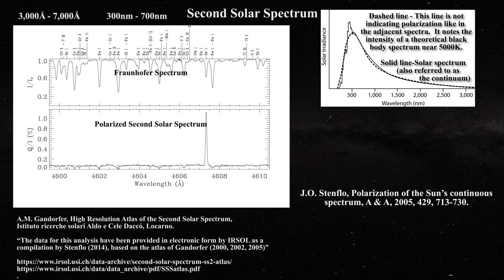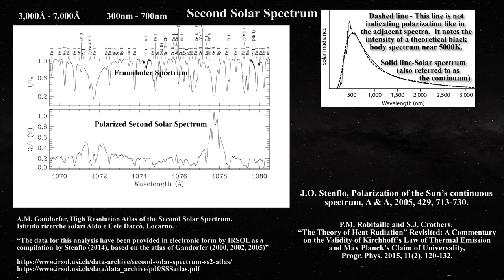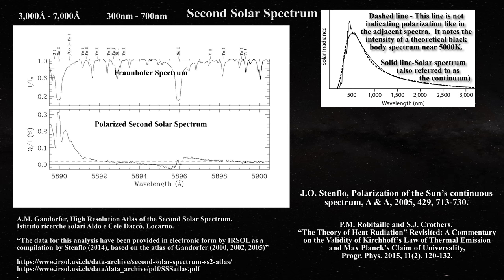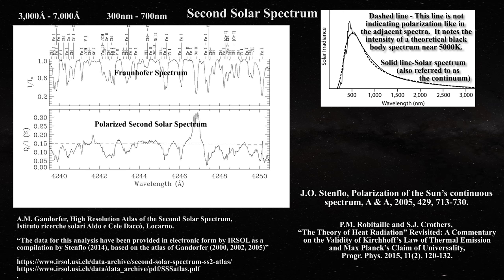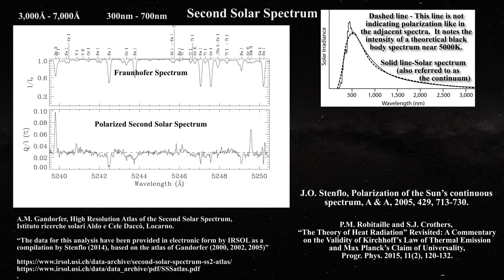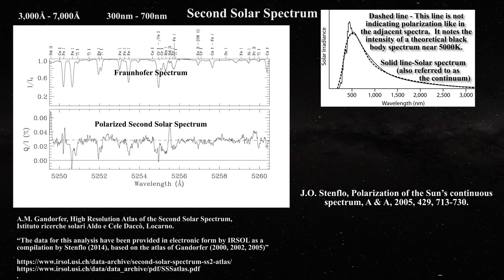You might recall that blackbody radiation is never polarized, as Gustav Kirchhoff and Max Planck emphasized long ago. Steve Crothers and I have discussed this issue in a paper. Therefore, since the spectrum produced by the photosphere closely approaches that of a blackbody, one would not expect that it could emit polarized radiation. However, the overlying atmosphere above the photosphere acts to slightly polarize the continuum spectrum, and this is what is indicated by the dashed line.